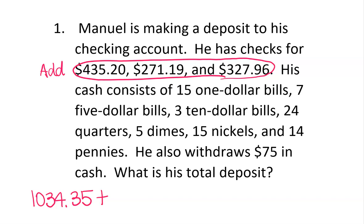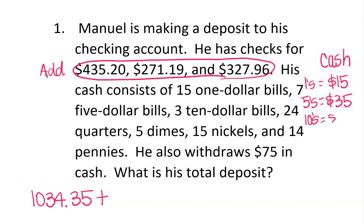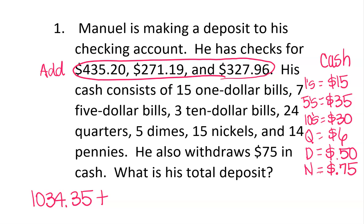Then we look at his cash. He has 15 one-dollar bills, so ones equal $15. Three twenty-dollar bills equal $60. Seven fives: 7 times 5 equals $35. Three tens equal $30. 24 quarters: 24 times $0.25 equals $6.00. Dimes equal $0.50. 15 nickels: 5 cents times 15 equals $0.75. And 14 pennies equal $0.14.